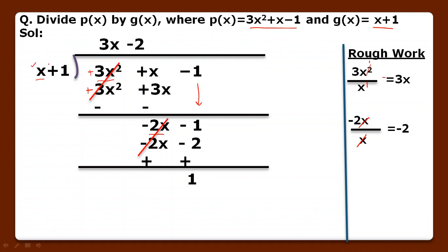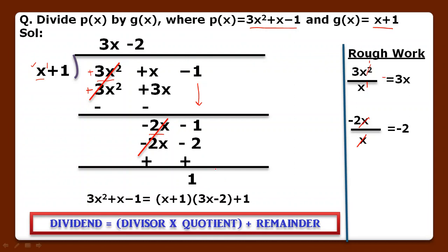We check the divisor: the degree of x + 1 is 1, and the remainder is a constant whose degree is 0. Since the remainder degree is less than the divisor degree, we stop. So the quotient is 3x − 2 and the remainder is 1. We can express this as: dividend = divisor × quotient + remainder, i.e., 3x² + x − 1 = (x + 1)(3x − 2) + 1. In this way we have learned how to divide two polynomials.